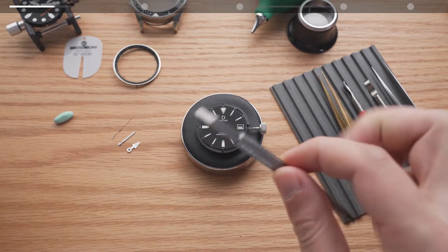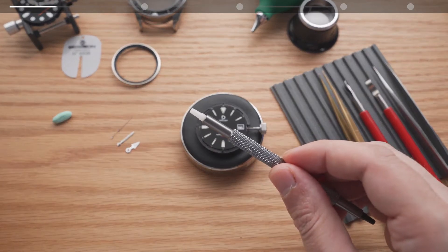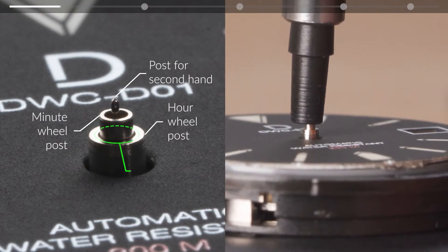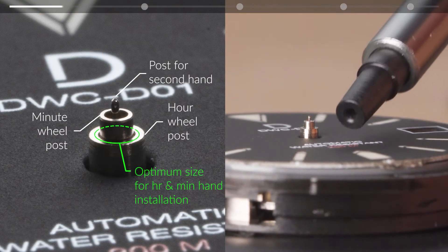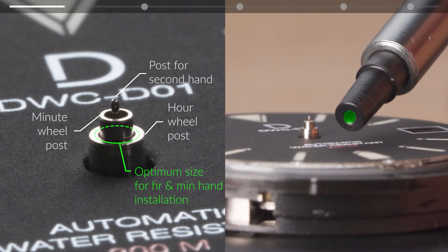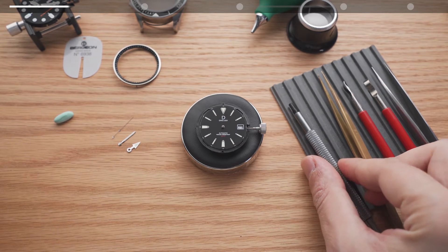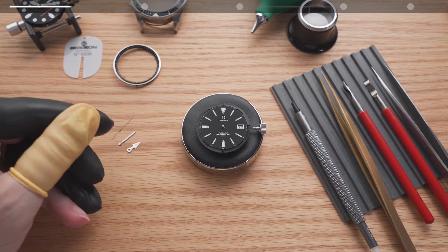For the hand installation tool this type is more than enough for most cases. For hour and minute hand installation choose the tip that has the center hole slightly larger than the post of a minute wheel. If the hole is too big you'll have worse control and risk bending the watch hand, while if the hole is too small you won't be able to set the outer hand.